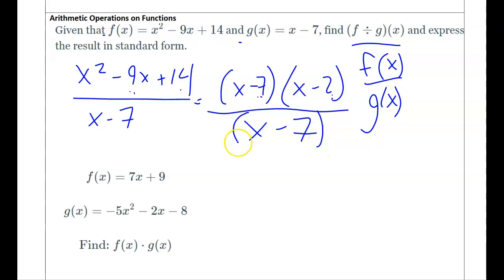But notice this cancels out now very nicely. So f(x) over g(x) is just what's left over. It's just x - 2. So this allows us to write down arithmetic operations that we know how to do easier.